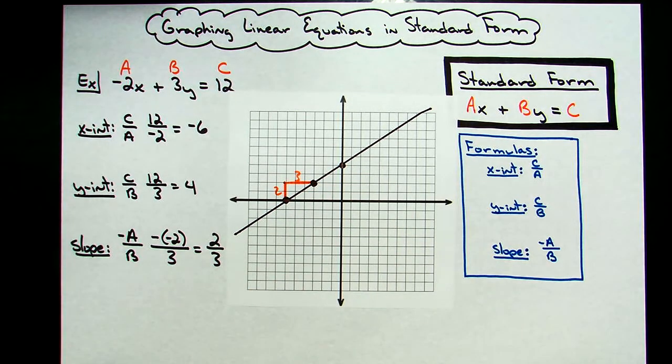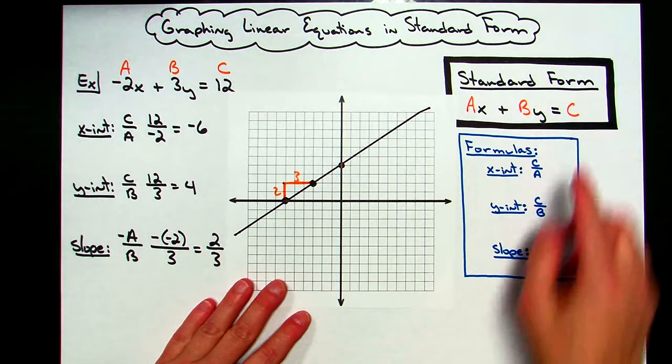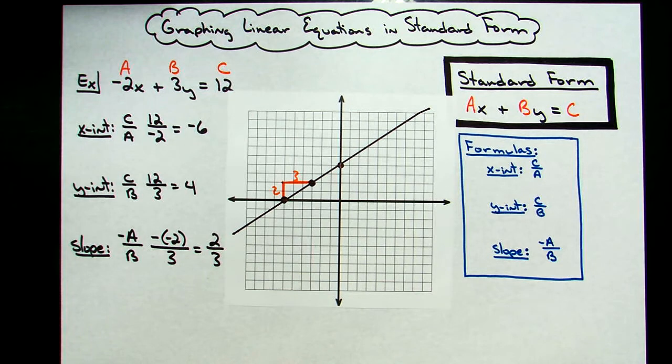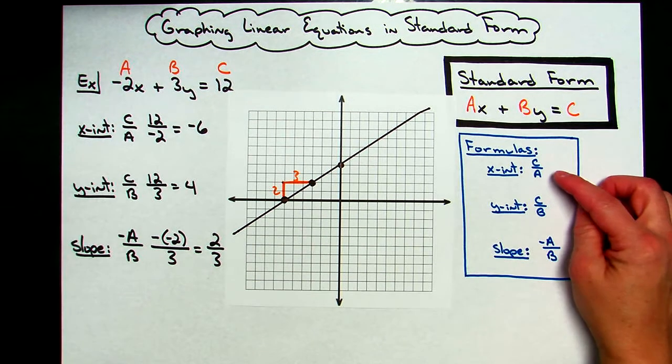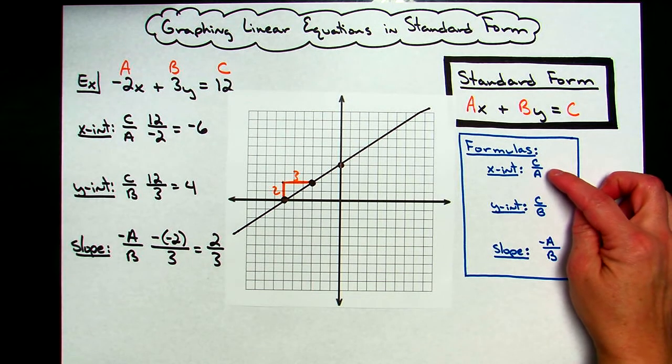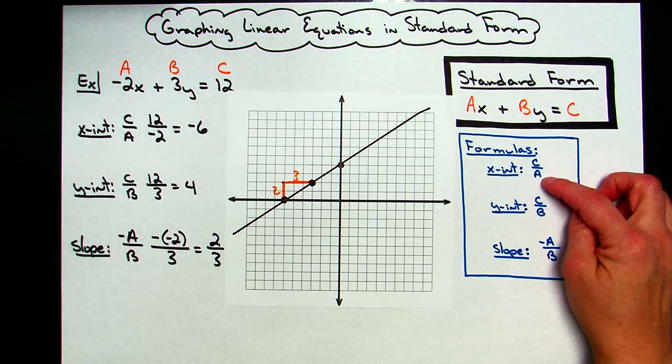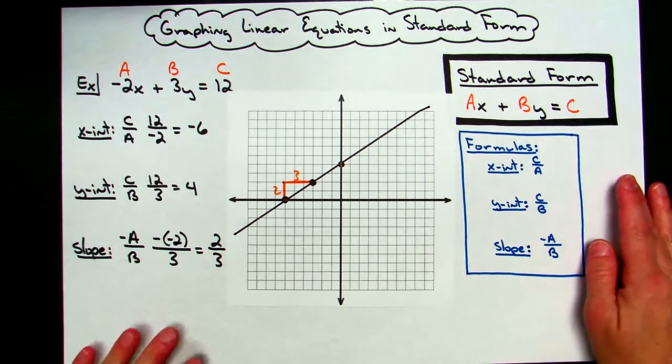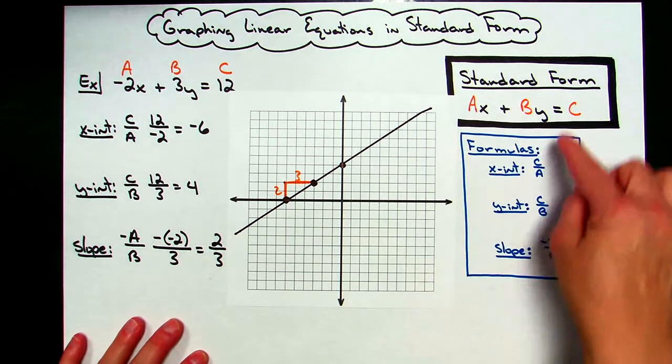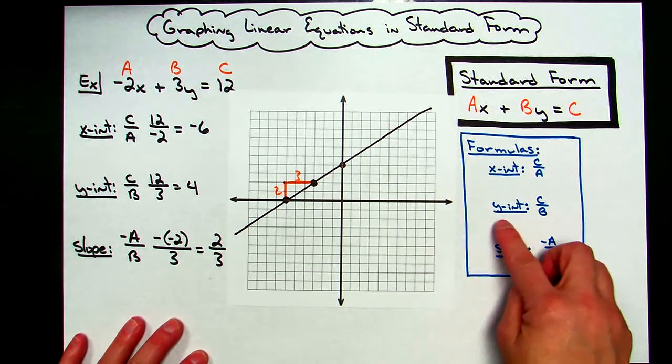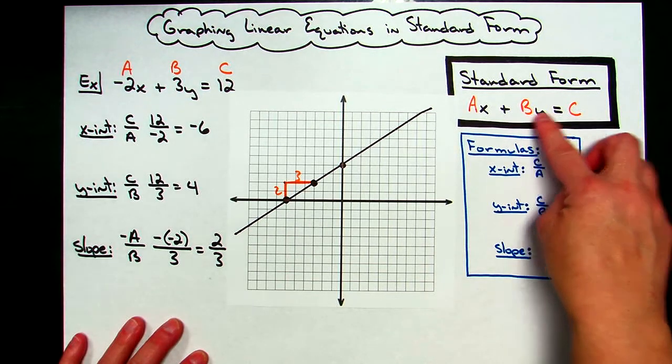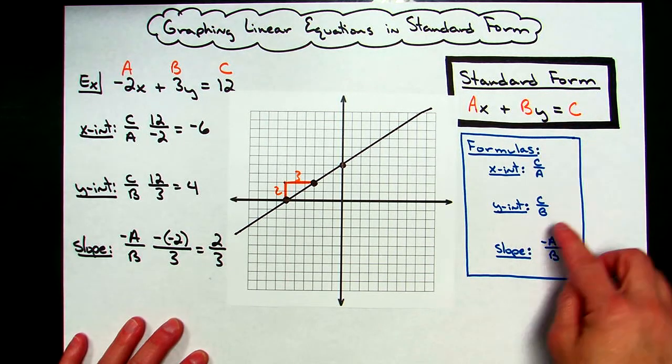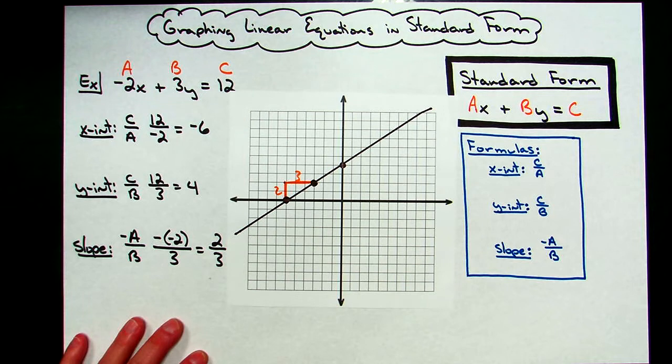But this is much quicker than trying to solve the equation for Y and graphing in slope-intercept form. Again, X-intercept can be found by C divided by A. I kind of remember that because it's always C divided by whatever the X coefficient is. Y-intercept, C divided by B. Easy to remember because it's dividing by whatever's in the front of the Y. And then slope, negative A over B.